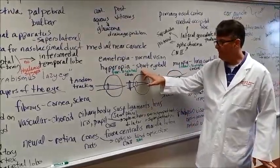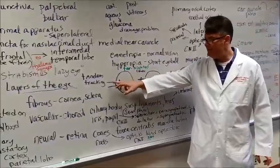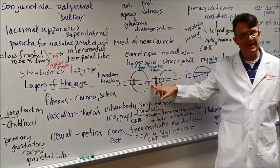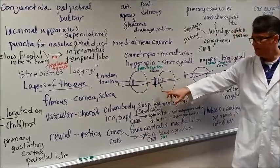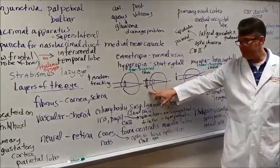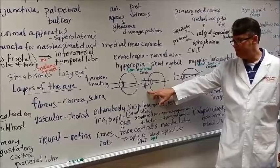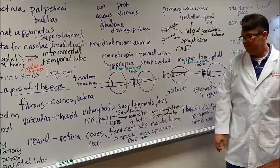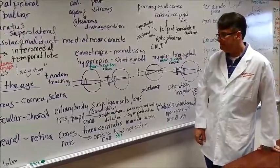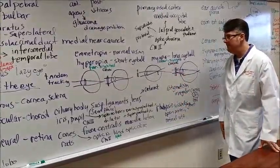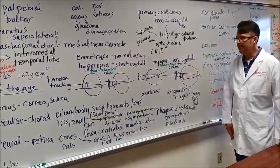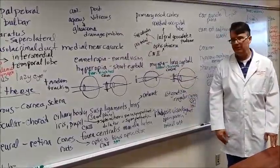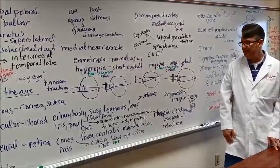If you or I have emmetropia, that is normal vision. I obviously don't have that because I'm wearing glasses. If a person's eyeball is too short, that's called being farsighted. And what happens is this. When the light rays come in through the lens, they focus behind the retina. So it requires a convex lens or a converging lens to focus this image properly on the fovea centralis in the back of the eye.